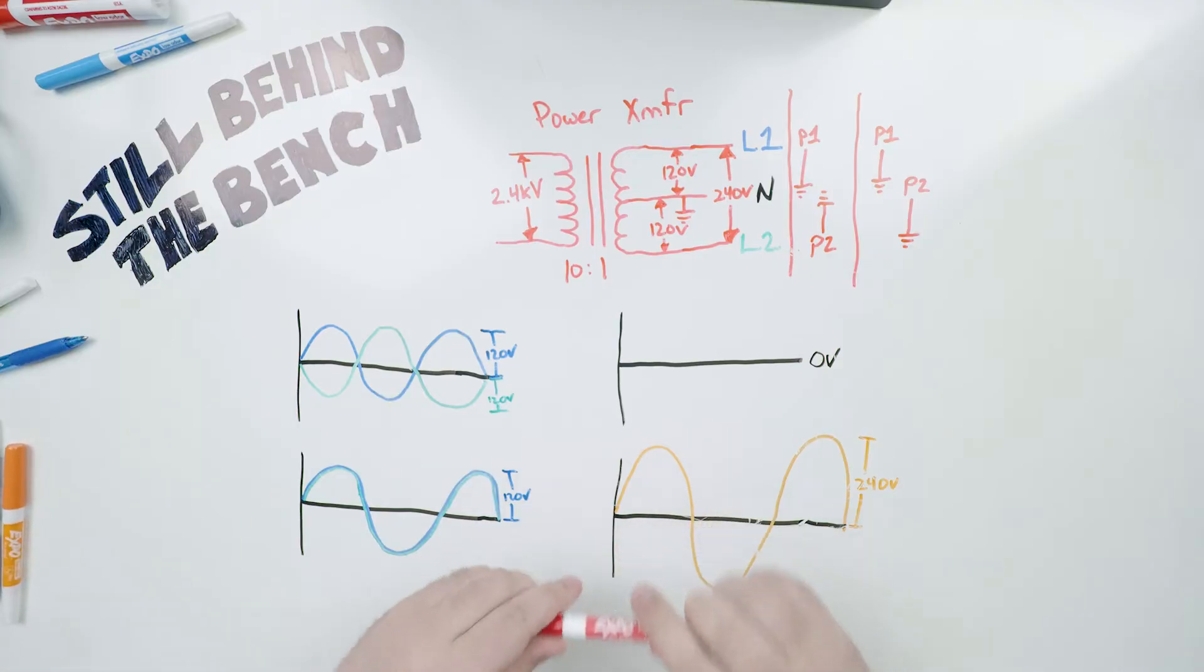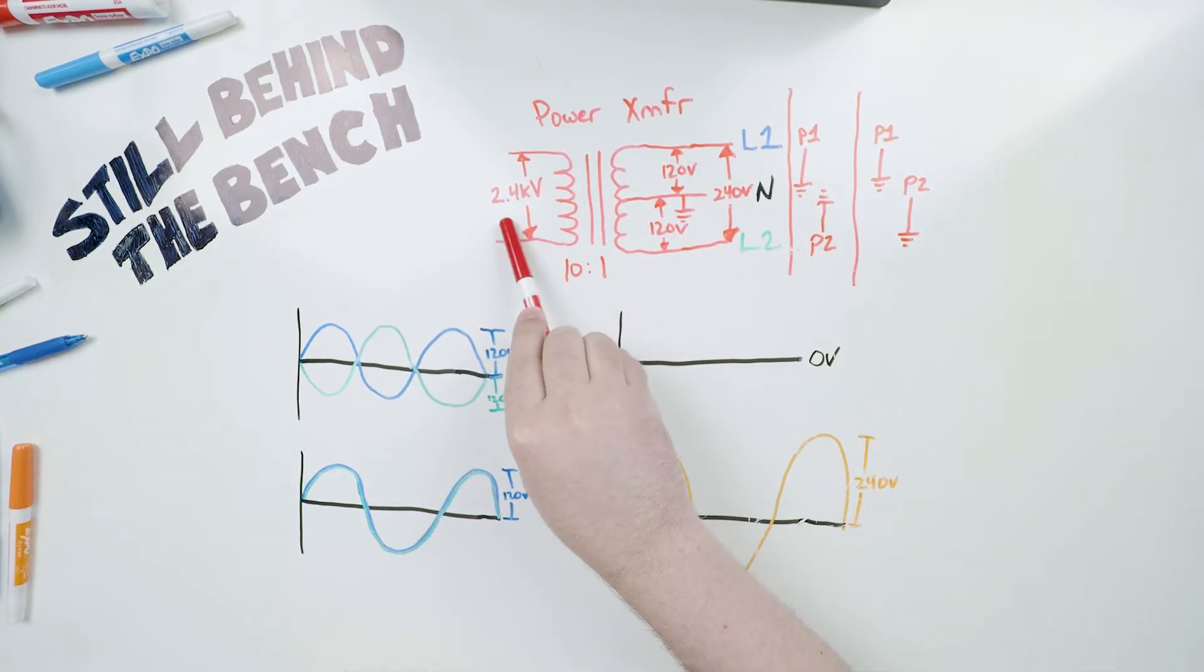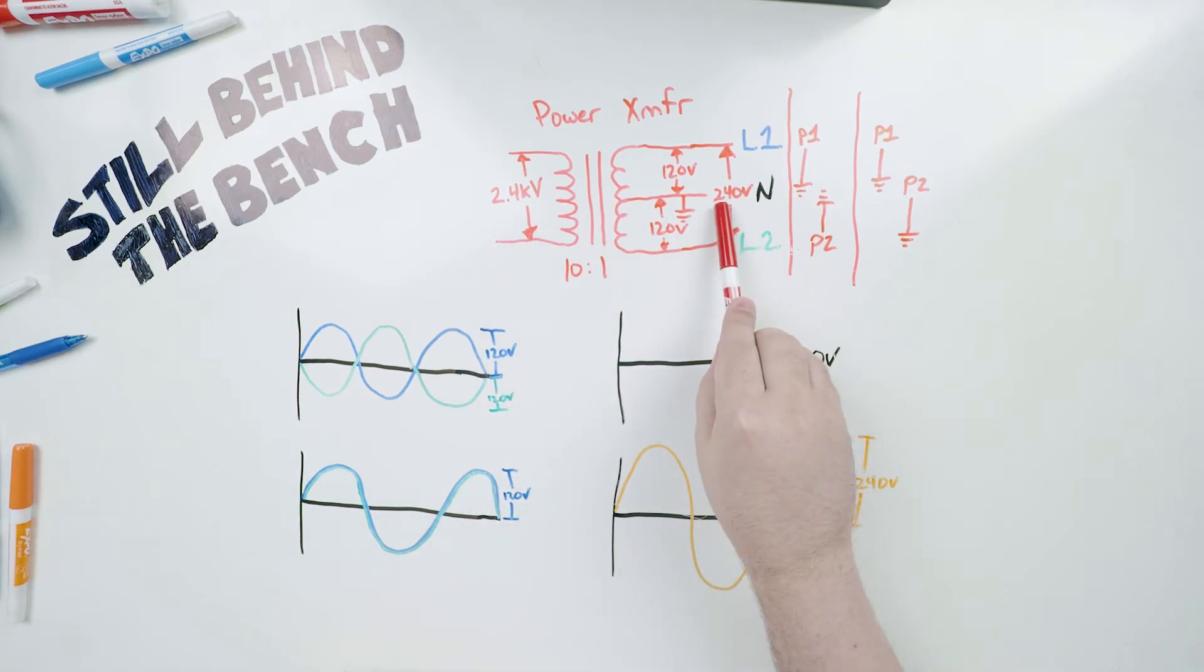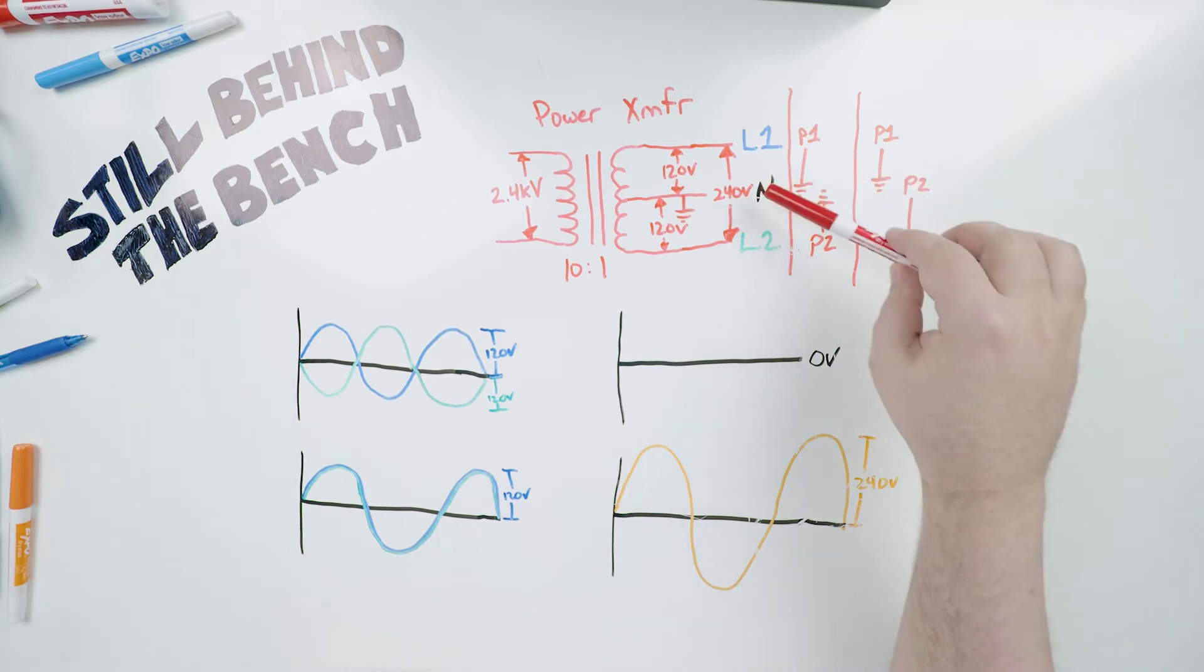Now to further explain this, we'll go to the board and I can show you some diagrams. Alright. So here we are at the bench talking about split phase power. So we have our power transformer, the 10 to 1 ratio. It has a 2.4 kilovolt input and a 240 volt output. It also has the center tap where there is a voltage potential of 120 volts between line one and neutral. And there's 120 volts between line two and neutral. Now, if you were to connect an oscilloscope to line one and line two, attaching the grounding straps for each probe to neutral, you'd see a waveform that looks like this.